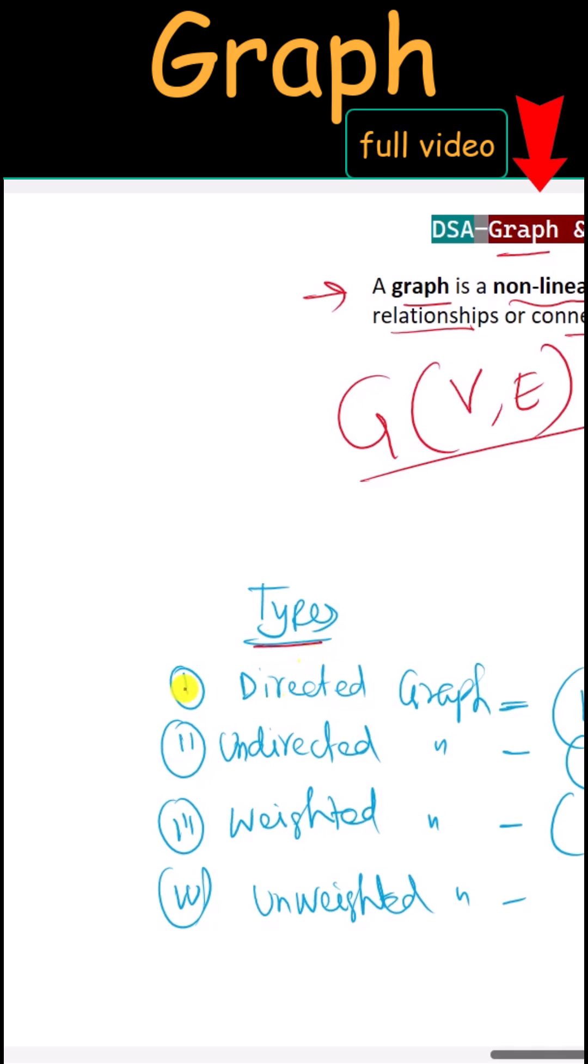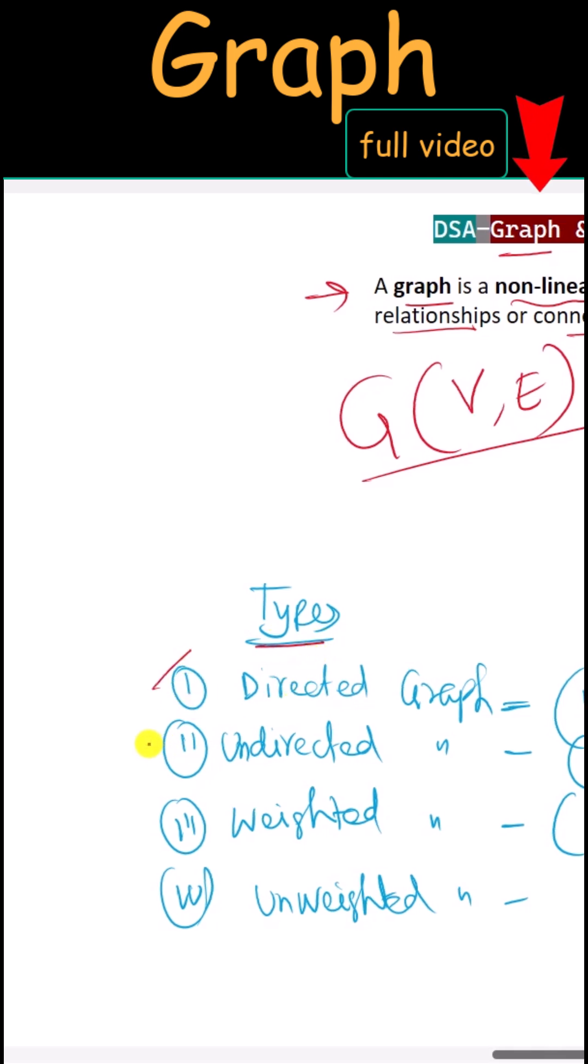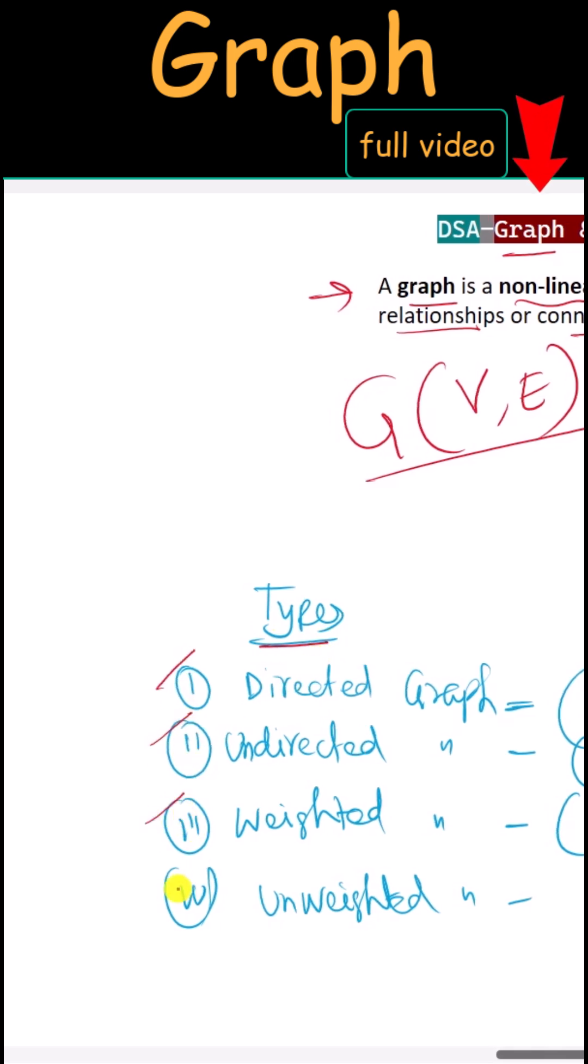There are a few types of graphs: directed graph, undirected graph, weighted graph, and unweighted graph.